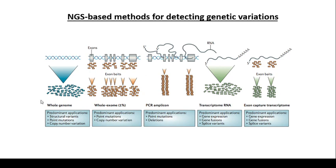The first one is whole genomic data. The predominant applications of whole genome sequencing are structural variations, point mutations, and copy number variations. Structural variation refers to chromosomal rearrangements — not protein structure, but the structure of chromosomal regions, such as translocations. A single point change can lead to a mutation that disrupts a whole gene, pathway, and its function. Copy number variation means that a whole chromosomal region or half a chromosomal region has been deleted or amplified.